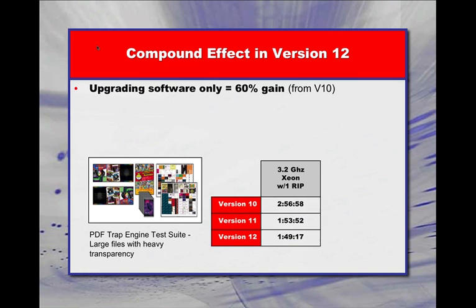If you focus on this first matrix, you'll see a big jump in speed when moving from version 10 to either version 11 or 12. According to this chart, the software, independent of the hardware, is about 60% faster.